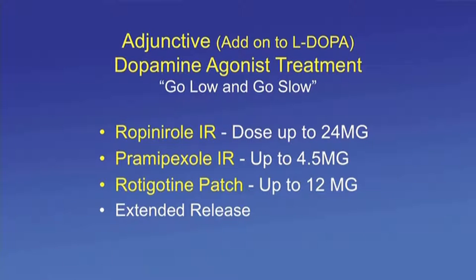Adjunctive dopamine agonist treatment follows the principle: go low and go slow. Ropinirole immediate or extended release up to 24 mg per day, or pramipexole extended or immediate release up to 4.5 mg per day — most patients respond between 1.5 and 3 mg per day. The rotigotine patch maintains a more consistent higher dopamine plasma level and is built up to 12 mg maximum. Apomorphine sub-Q is also an option.